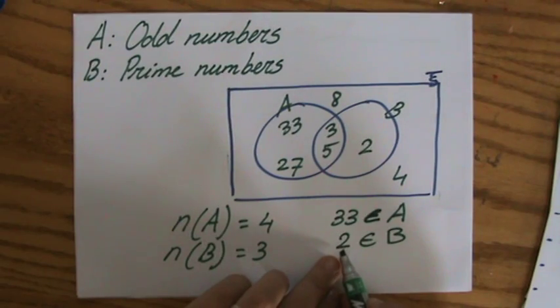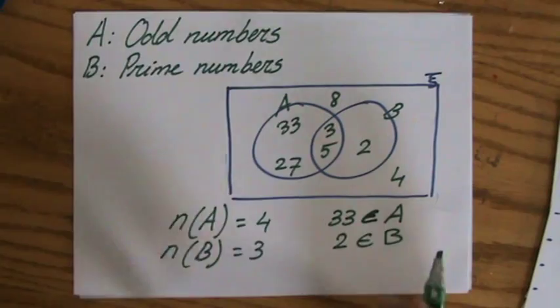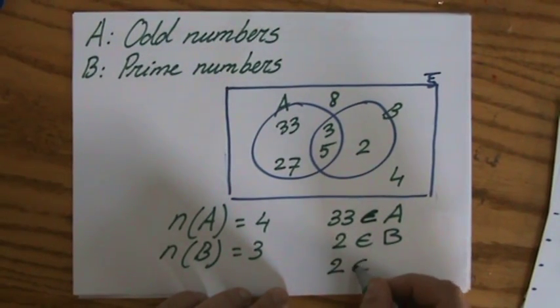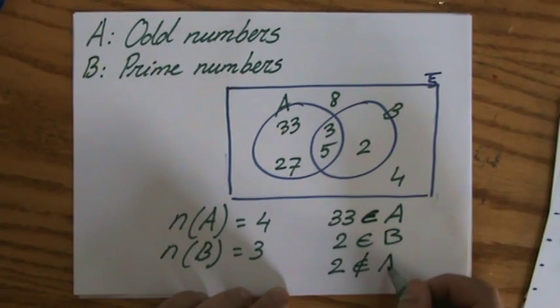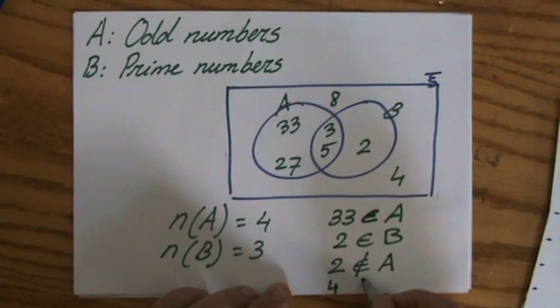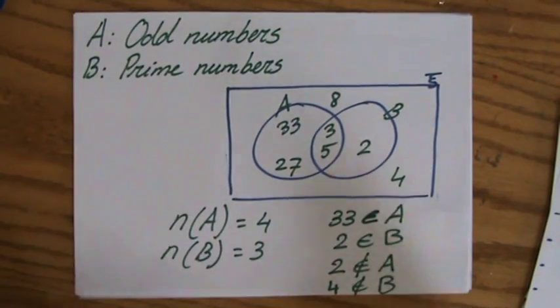Which means that the number two is inside set B. And simultaneously, you can say that two is not an element of A. So you put a little cross through it. Or four is not an element of B.